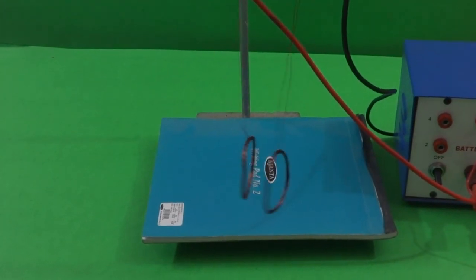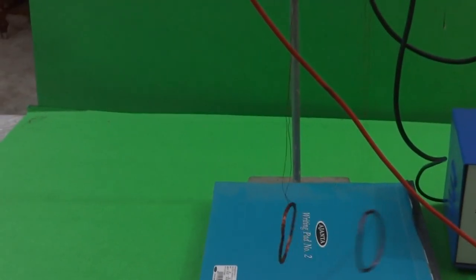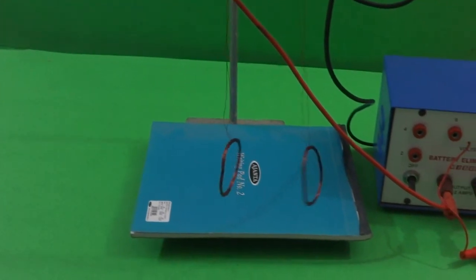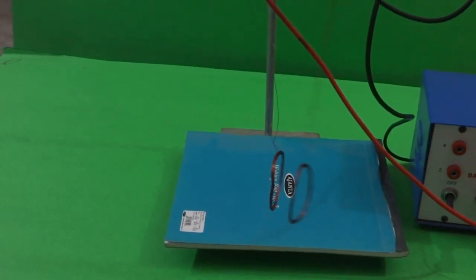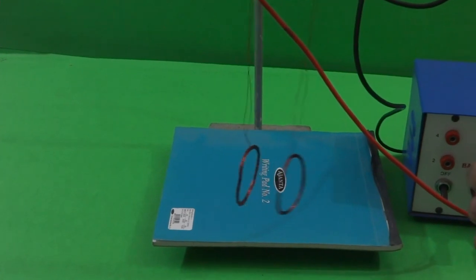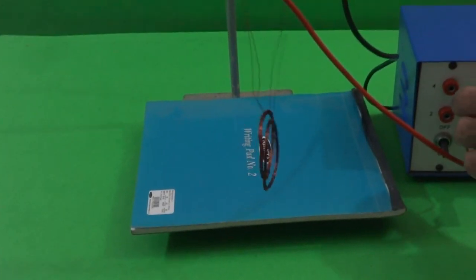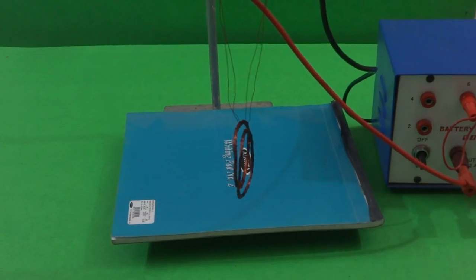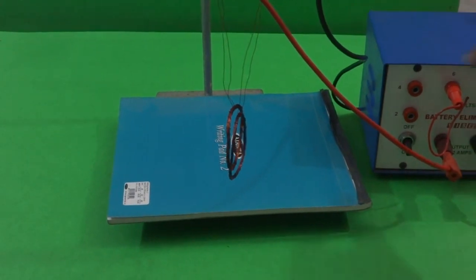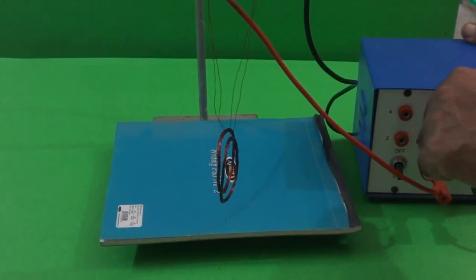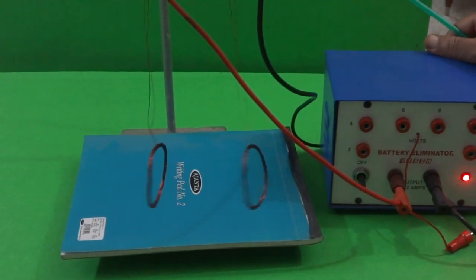This activity shows that if the direction of the current is same in both the coils, then there will be a force of attraction between the two coils. In fact, with the help of this activity, we can define the definition of the ampere.